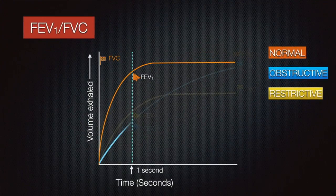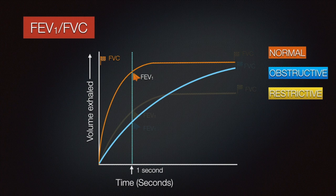The next tracing in a case of obstructive lung disease has characteristic expiratory flow limitation. The curve is more inclined. FEV1 is proportionately much less than FVC. A low FEV1 by FVC ratio points towards an obstructive lung pathology.